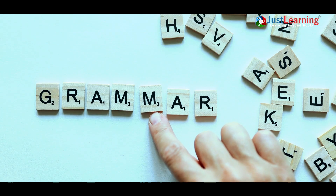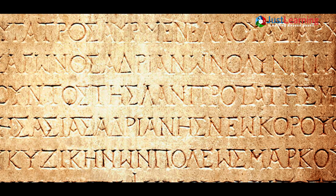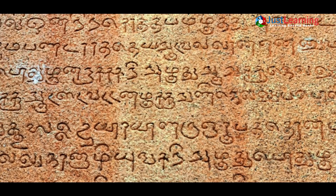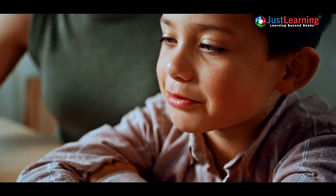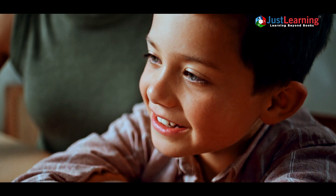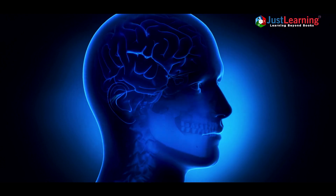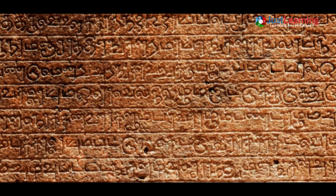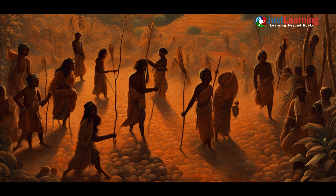After basic vocalizations and gestures, the next major development in language was grammar and syntax — the rules that help us form sentences and express complex thoughts. It's believed that early humans began with a proto-language, which consisted of simple words or short phrases without much structure. Think of it like how young children speak before they fully learn grammar. As human brains evolved, particularly in areas responsible for language processing, our ancestors gained the ability to create more complex sentences, including verbs, nouns, and adjectives.